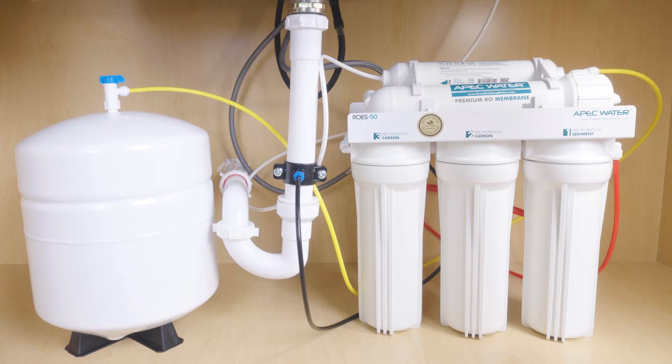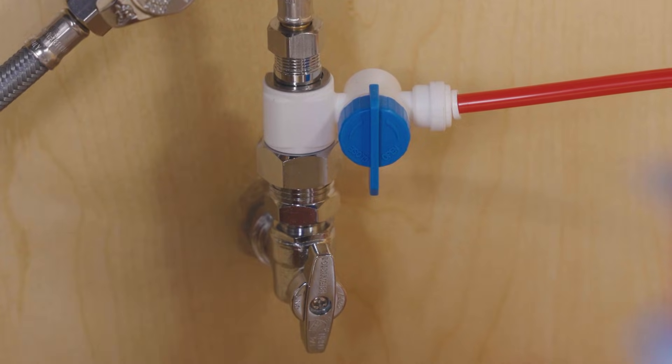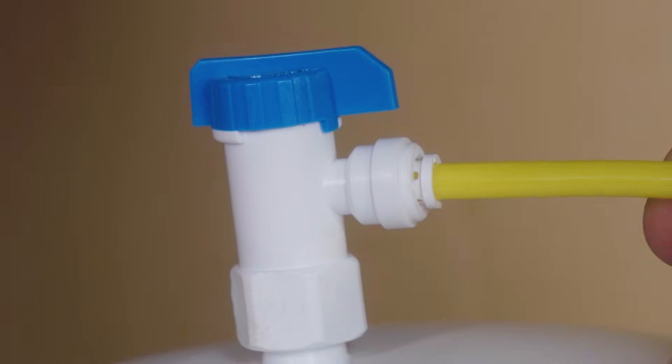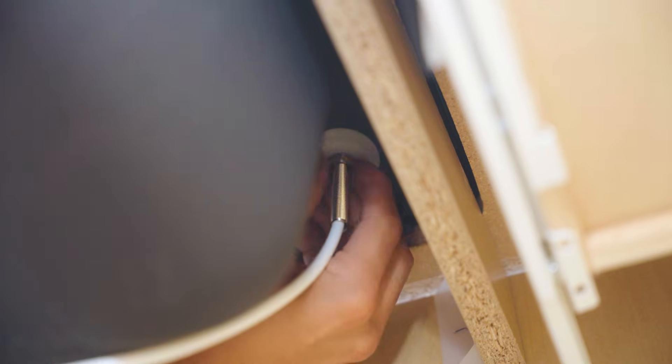Let's check your connections. Red for feed, black for drain, yellow for tank, clear for faucet.